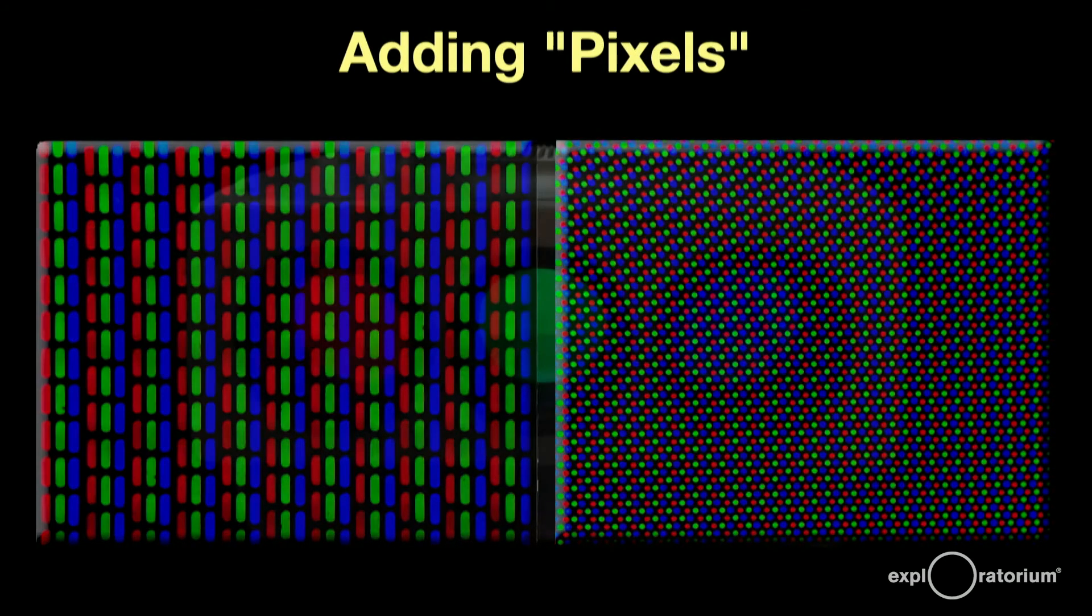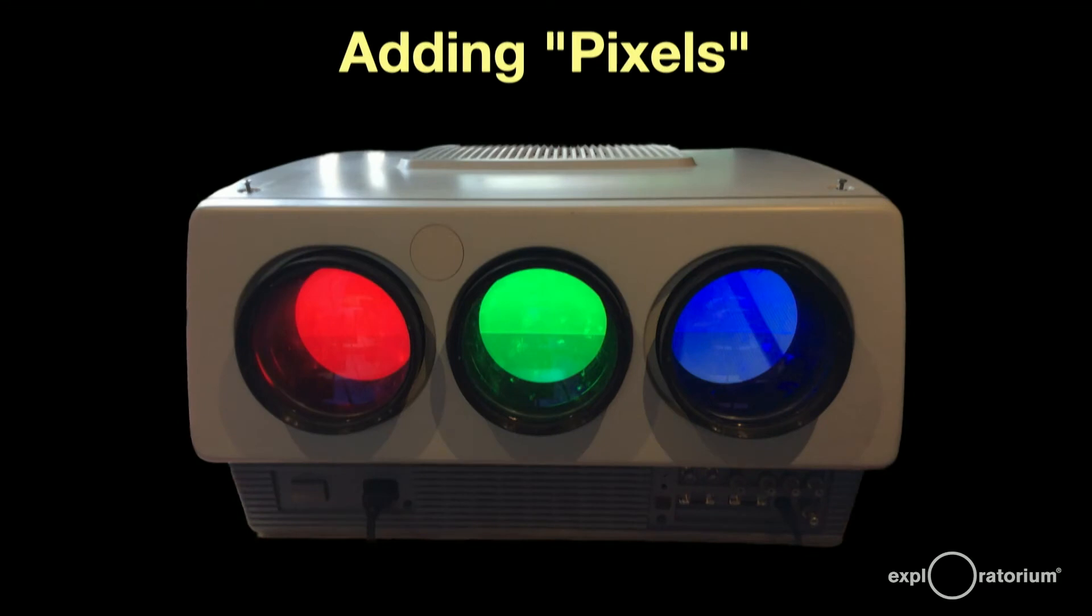The first projection TVs had three separate red, green, and blue projection tubes.